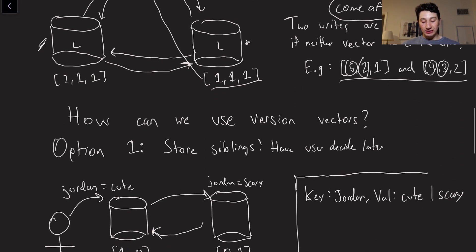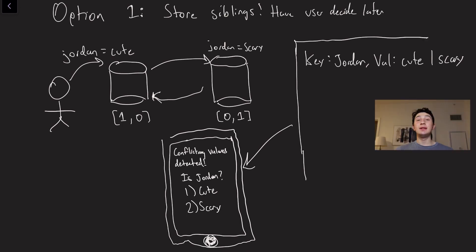Well, let's think about it. Option one is to store siblings. So let's say I've got one guy over here who writes Jordan is scary. And then we've got a second guy on the left who writes Jordan is cute. So according to our version vectors, we know that the version vector for Jordan equals cute is one comma zero. Why? Because there's been one write on the left side and zero writes on the right side, at least accounted for in this leader. And then similarly, the guy who writes Jordan equals scary has an associated version vector of zero comma one. Why? Because this database node hasn't seen any writes from leader one, but it now has one write for itself. And so we look at these two things and we'll say, okay, well, one comma zero and zero comma one, how do they compare? Well, in this case, one is greater than zero, but zero is less than one. So they must be concurrent. And if they're concurrent, that means that this is a write conflict. And so if it's a write conflict, what can we do?